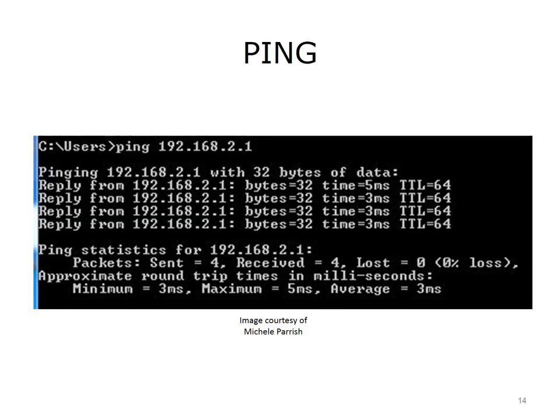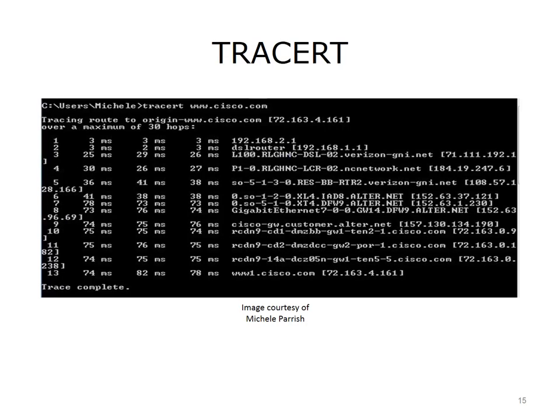Internet Control Message Protocol, ICMP, is another protocol that operates at the network layer. Even though IP is an unreliable protocol, it allows some messages to be sent back to the sender in case of a delivery error. Common ICMP messages include unreachable destination or service, time exceeded, route redirection, and source quench. ICMP is also used with the Ping and Trace Route utilities.